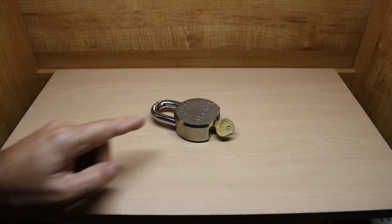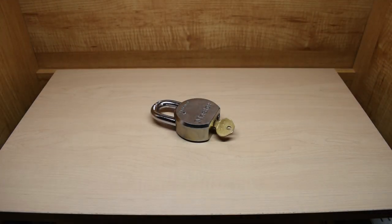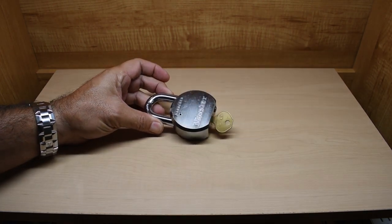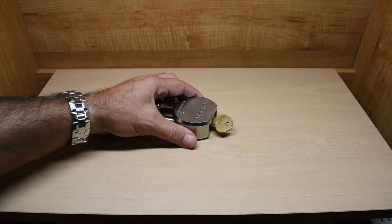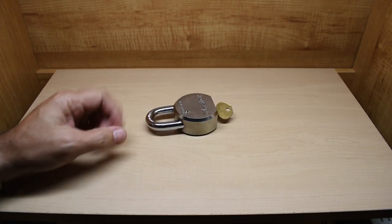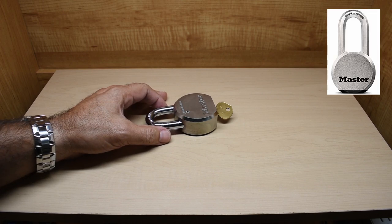Welcome back to another lock related video. Not too long ago I went to my local ReStore and I came across this older style Master padlock. It's extremely heavy and it has that round thick shackle. The newer ones are either hexagonal or octagonal.